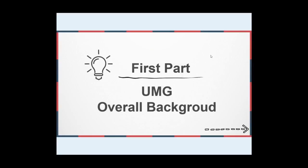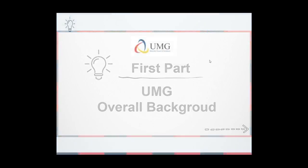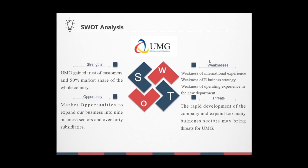The first part is UMG overall background. UMG is a diversified group of companies which was first founded in 1998 in Myanmar. UMG gained trust of customers and 50% market share of the whole country. For the weaknesses, in the process of rapid development, UMG also has a series of problems — for example, weakness of international experience, weakness of developing e-business strategy, and weakness of operating experience in new departments.